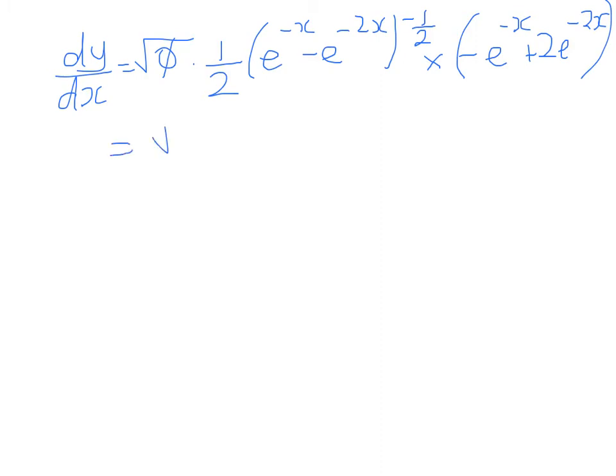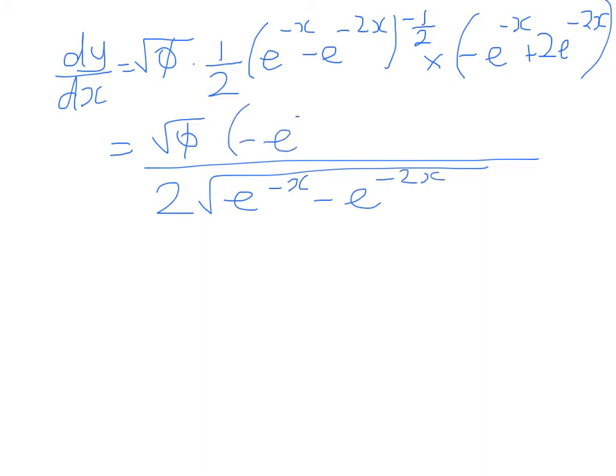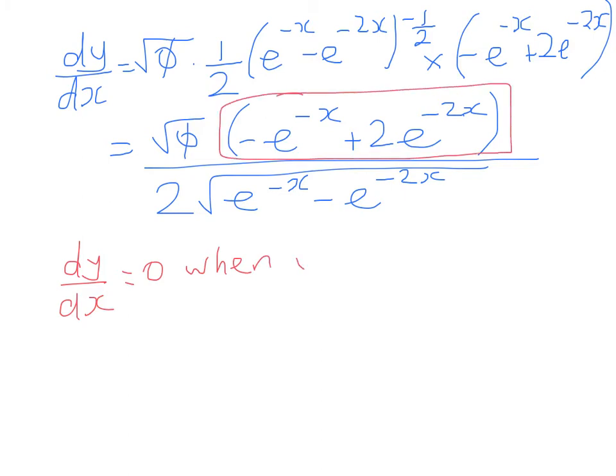Now we're going to write that out a bit better. We get phi over 2 times the square root of e to the negative x minus e to the negative 2x. And on the numerator, we have this. Now that looks pretty hideous until you remember that all we have to do is to say, where will it equal 0? In a fraction, if we want something to equal 0, we just focus on the numerator. So it will equal 0 when this is true. We divide both sides through by the square root of phi and we get 2e to the negative 2x equals e to the negative x, or 2 over e to the 2x is equal to 1 over e to the x.